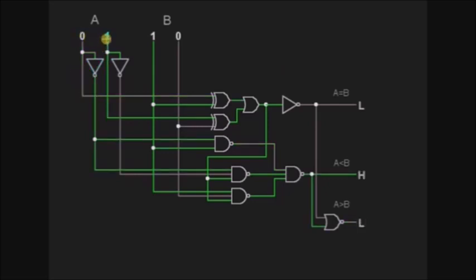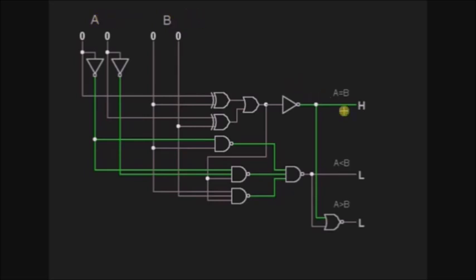Now I am taking an example where all inputs are zeros. A is 0,0 which is nothing but 0, and B is 0,0 which is also 0. So A equals 0 and B equals 0, that is A equals B. We will get the A equals B output high. We will check how this is getting high.